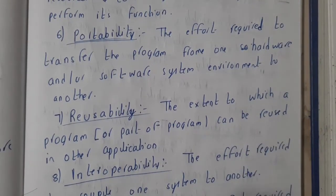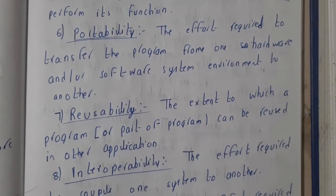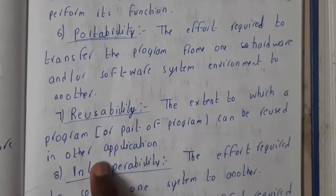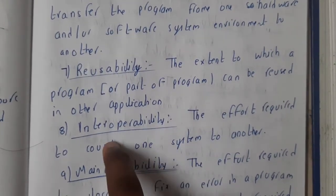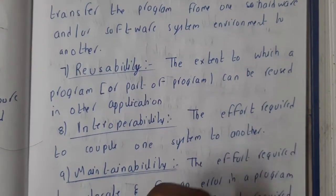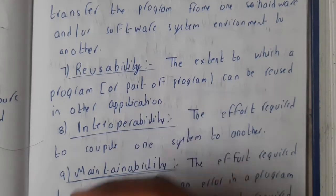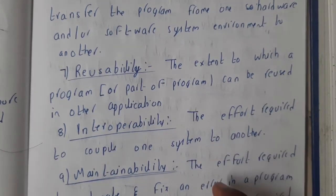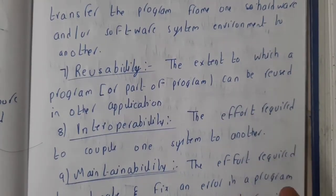Reusability: whenever you are developing something, if there is a chance to reuse something, please make sure you reuse it because it will save your time. The extent to which a part of a program can be reused in other applications is reusability. Interoperability means each and every component should have some coupling with every other module — it may be loose coupling, where each individual module can run on its own but has a relation, or strong coupling, where both modules must run together.